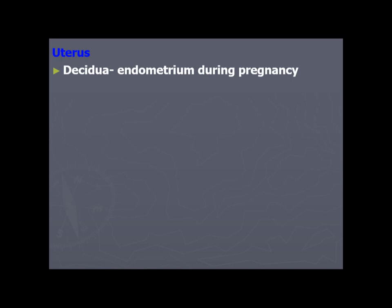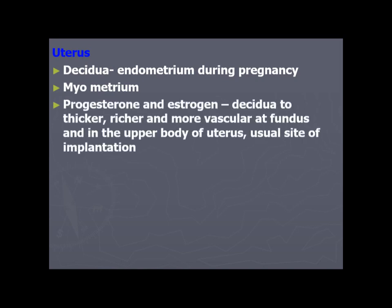The endometrium of pregnancy is known as the decidua. The uterus has three layers: the endometrium, the muscle layer (myometrium), and the peritoneal layer (perimetrium). During pregnancy, estrogen and progesterone make the decidua thicker, richer, and more muscular, especially at the fundus and upper body of the uterus, which is the usual site for implantation.